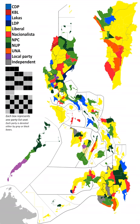Each district sends one representative to the House of Representatives, with the winner having the highest number of votes winning that district's seat. The representatives from the districts comprise at most 80% of the seats.